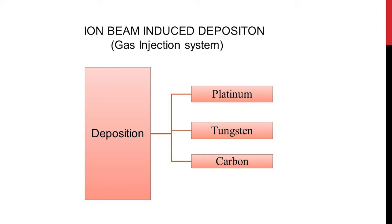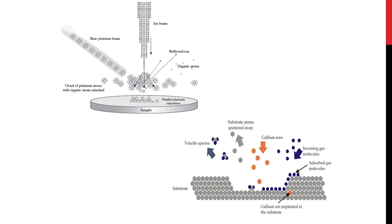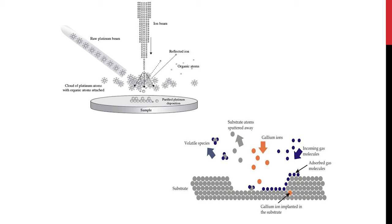The next module is ion beam induced deposition, which is termed as a gas injection system. We have three precursor gases — platinum, tungsten, and carbon — which are useful for in-situ deposition. The basic principle is that the gallium ion beam scans the sample surface. Taking platinum as an example: we have a platinum precursor with a single platinum atom surrounded by many organic atoms. When this interacts with the ion beam at 30 kV energy, the platinum atom gets deposited on the sample surface and all the volatile compounds leave. This way, we deposit layer by layer of platinum on the sample surface.